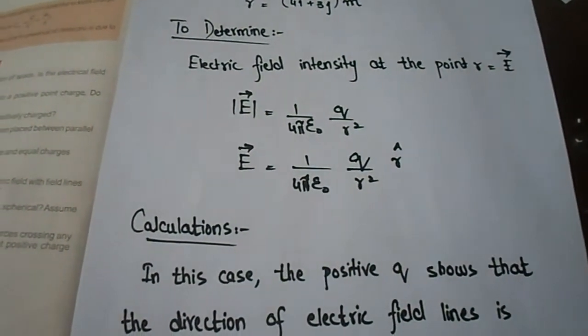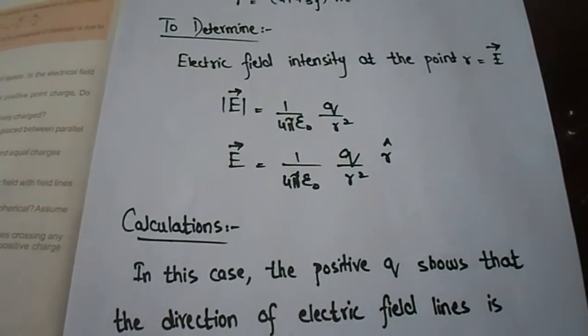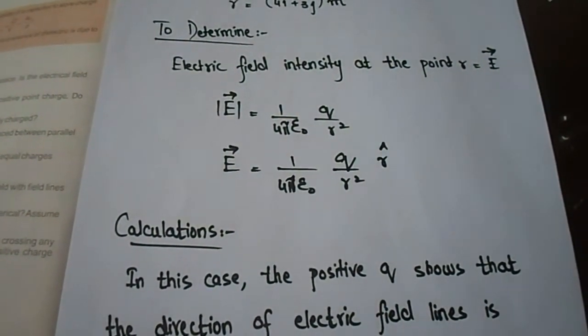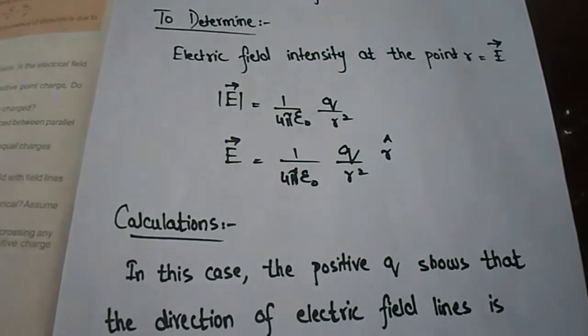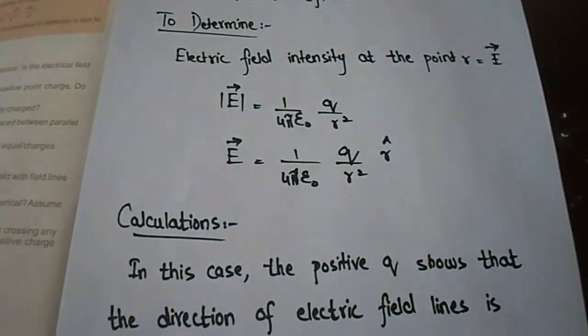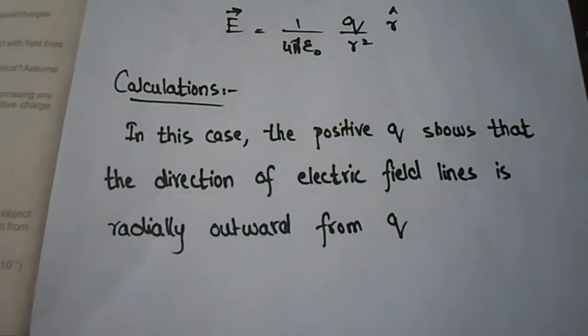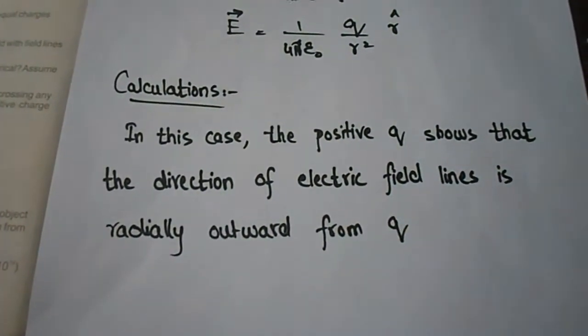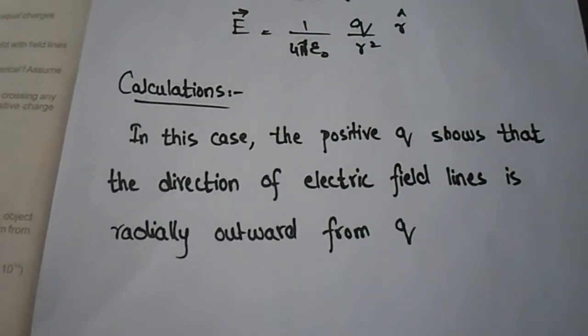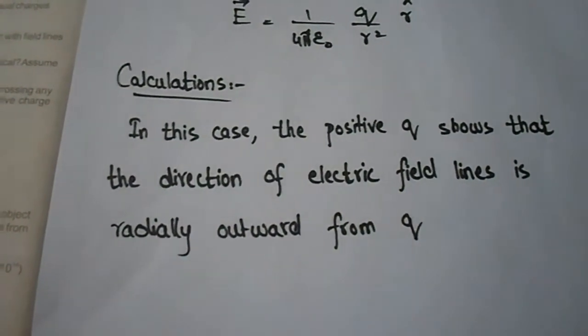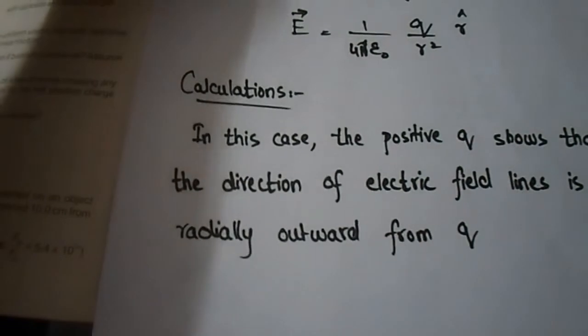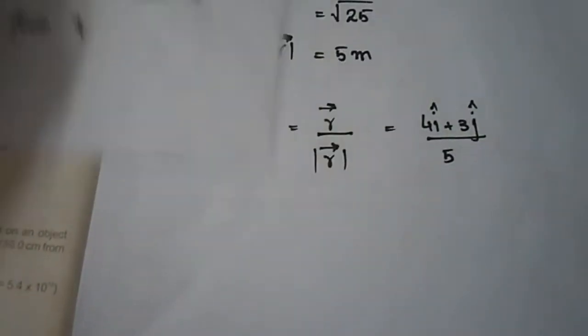But because electric field intensity is a vector quantity, if we find the direction also, then unit vector r will also come in the formula. One more thing - because q is positive, it shows that the electric field lines will radially outward point from q. If it is negative, it would be radially inward.